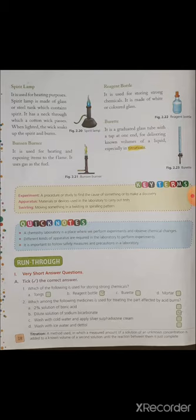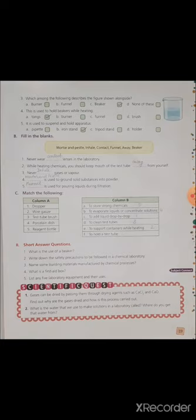Now very short answers question. Take the correct answer. Question number one. Which of the following is used for storing strong chemicals? That is reagent bottle. Which among the following medicines is used for treating the part affected by acid burns? That is dilute solution of sodium bicarbonate. Now the next is which among the following describes the figure shown alongside? That is the beaker. This is used to hold beakers while heating. That is tongs. It is used to suspend and hold apparatus. That is iron stand.